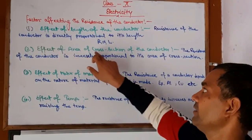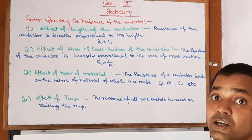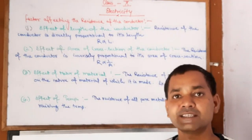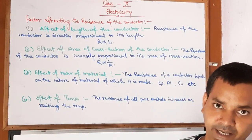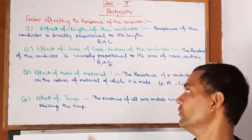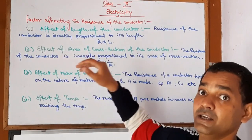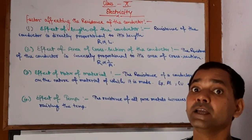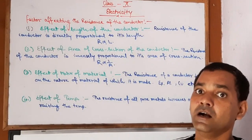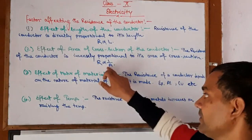Point number two: effect of the area of cross-section of the conductor. Area of cross-section here means the thickness of the wire. The resistance of the conductor is inversely proportional to the area of cross-section — R ∝ 1/A.